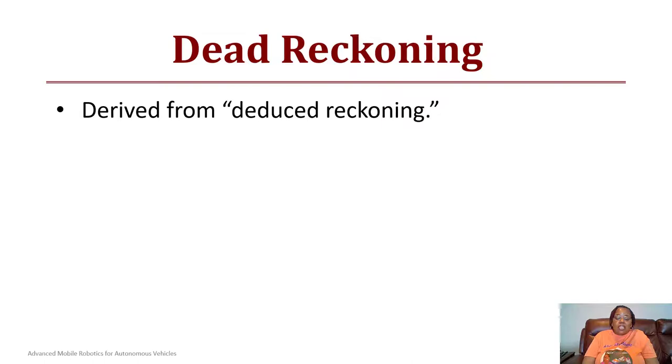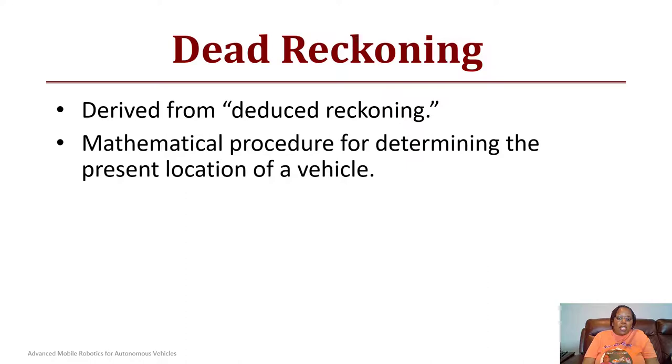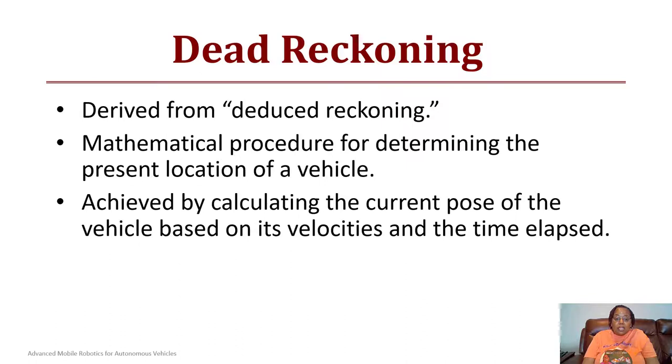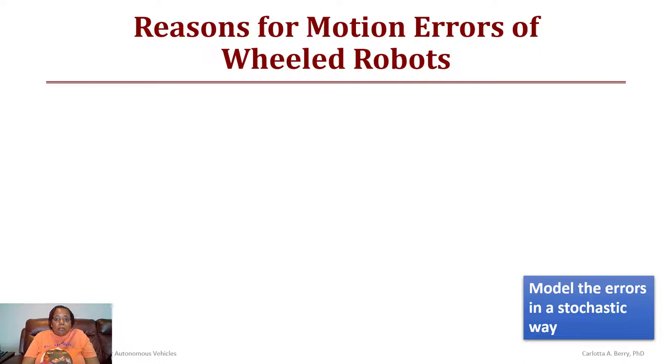The term dead reckoning is actually derived from deduced reckoning and it's a mathematical procedure for determining the present location of a vehicle. It was achieved by calculating the current pose of a vehicle given its velocity and the time that elapsed. It was used to log the position of ships.